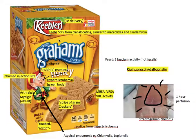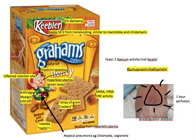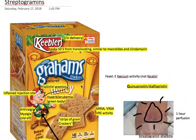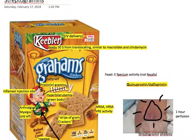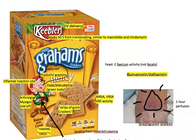So I got the Keebler Elf graham crackers to represent Streptogrammins. You can see there's a strip of graham crackers here. So when we think of Streptogrammins, to remember the information around that drug, we need to just think of a strip of graham crackers in this box and it should remind us of a bunch of those features.